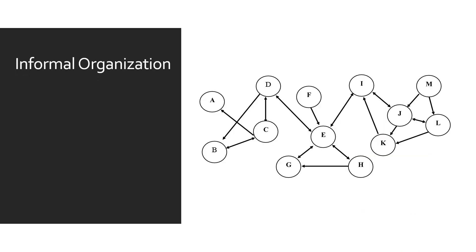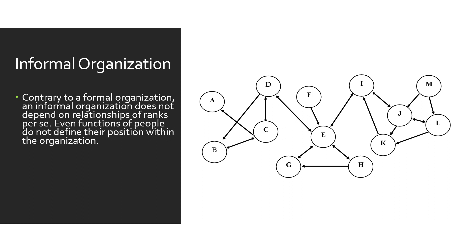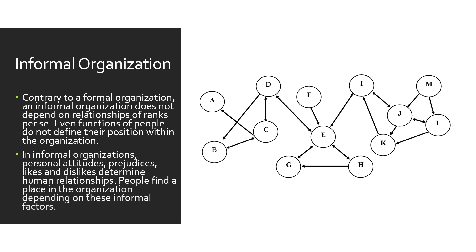Informal organization. Contrary to a formal organization, an informal organization does not depend on relationships of ranks per se. Even functions of people do not define their position within the organization. In informal organizations, personal attitudes, prejudices, likes and dislikes determine human relationships. People find a place in the organization depending on these informal factors.